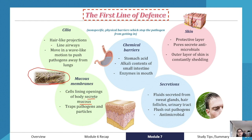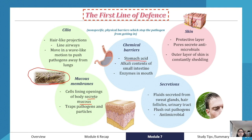Then we have chemical barriers. These include stomach acid, which is very acidic and ensures that harmful bacteria don't survive those conditions. There are also alkaline contents of the small intestine and enzymes, which help ensure that any pathogens don't travel down to our important organs like the lungs and start infecting them.